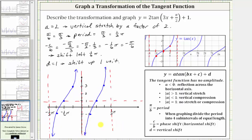Going right another one-third pi radians — one-third pi plus one-third pi equals two-thirds pi — brings us to approximately here. We divide this into four equal subintervals with a vertical asymptote to the right. In the middle, we are on the horizontal axis. To the right one-fourth of the period we go up two units; to the left one-fourth of the period we go down two units to this point, giving us another piece of the graph of the given tangent function.